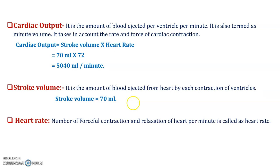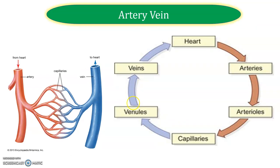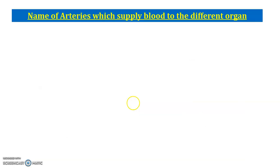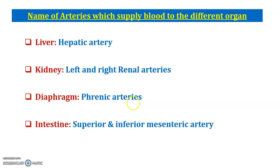Cardiac output is defined using stroke volume and heart rate. Regarding arteries and veins: arteries carry blood away from the heart while veins carry blood towards the heart. Arteries generally carry oxygenated blood and veins carry deoxygenated blood. Arteries are thick and reddish in color, while veins are thin and bluish in color. Some examples: the hepatic artery supplies the liver, the renal artery supplies the kidney, and the superior and inferior mesenteric arteries supply the intestines.